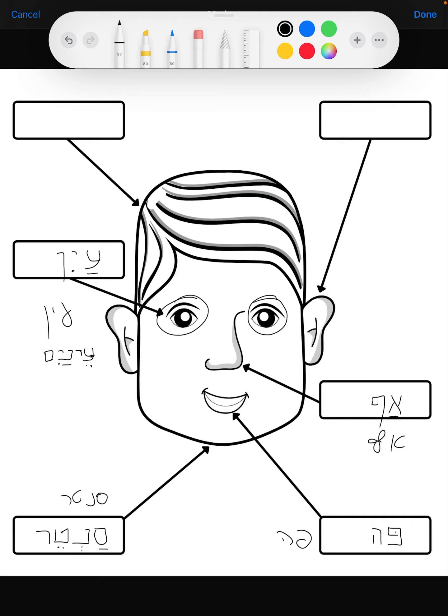But sometimes the spelling in cursive changes because you don't have vowels. Okay, so when we are going to write eyes, we're going to write it like this. We're going to write it with two yods.